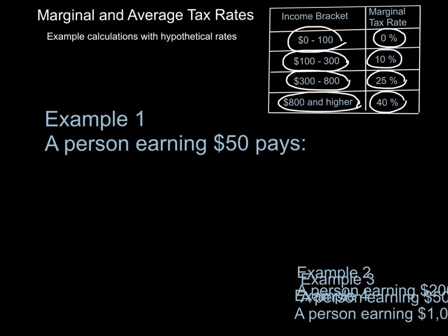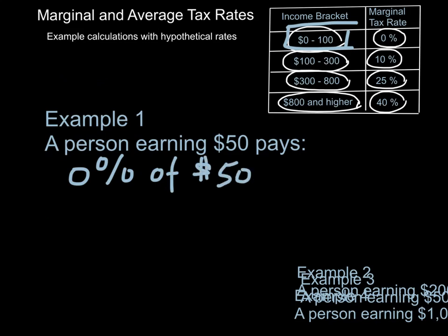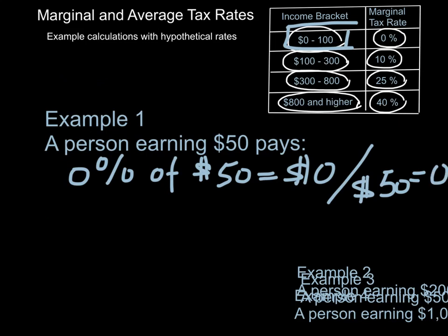So let's start with the easy one — the person earning fifty dollars. You can see that the person is in the zero percent tax bracket because their income is between zero and a hundred dollars, which is taxed at zero percent. So the person is going to pay zero percent of fifty dollars, and of course that's zero dollars. If you take zero as a percentage of the total income of that person, that gives you the average tax rate — also zero percent.